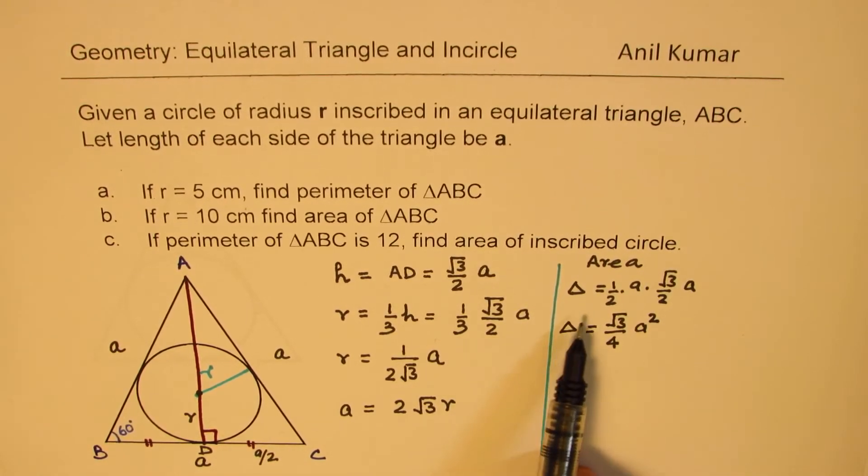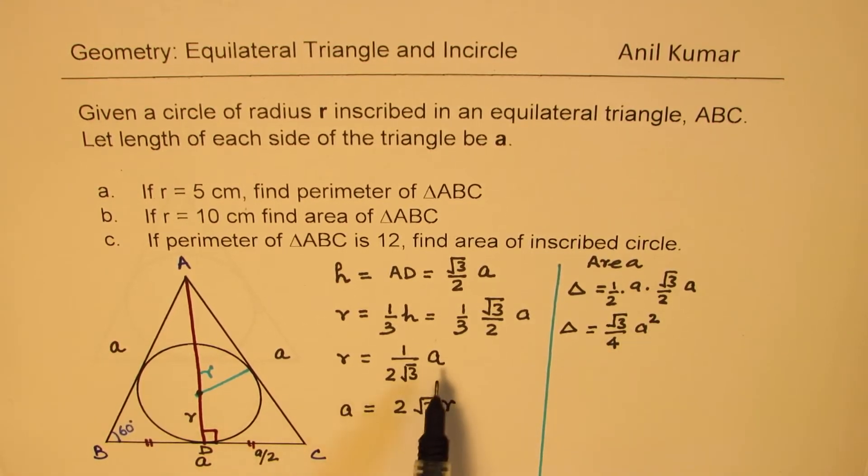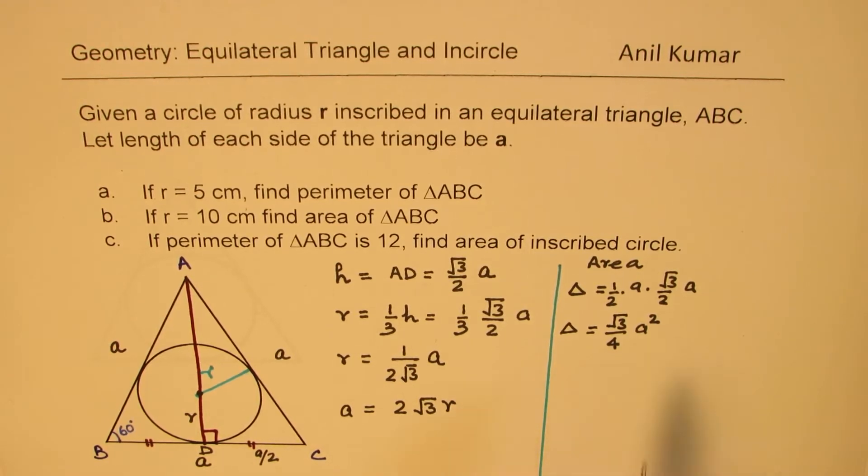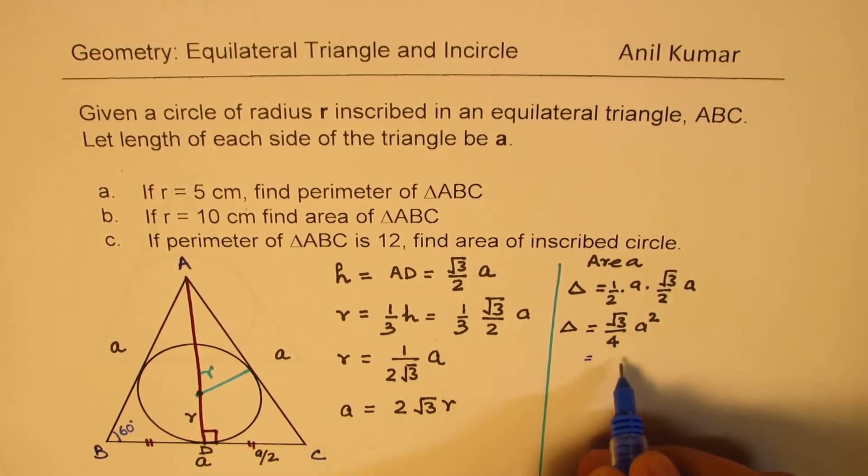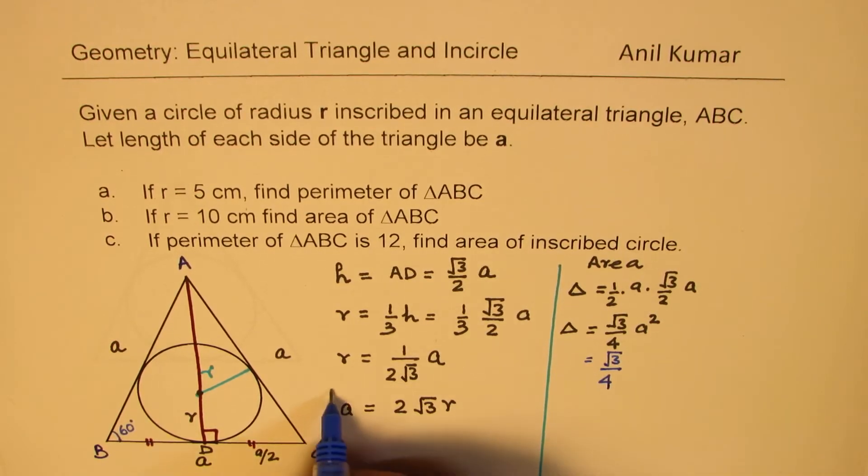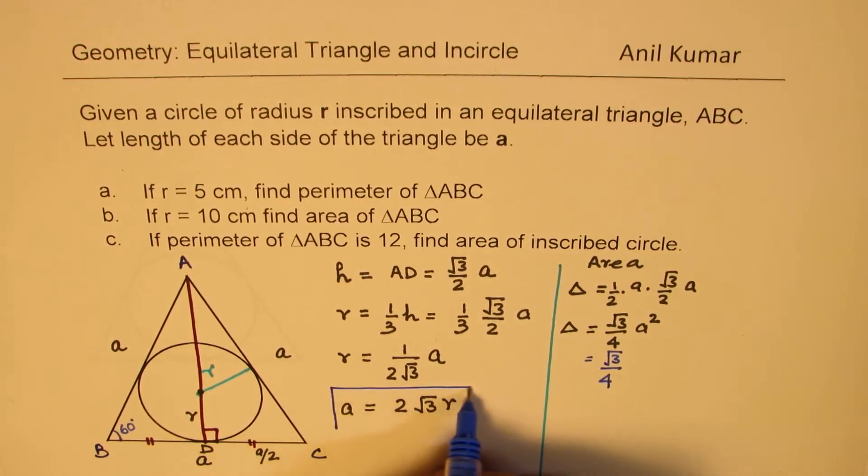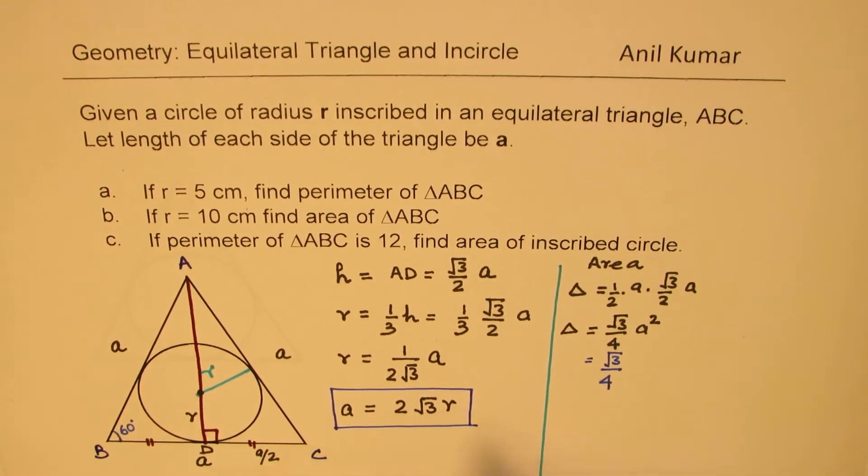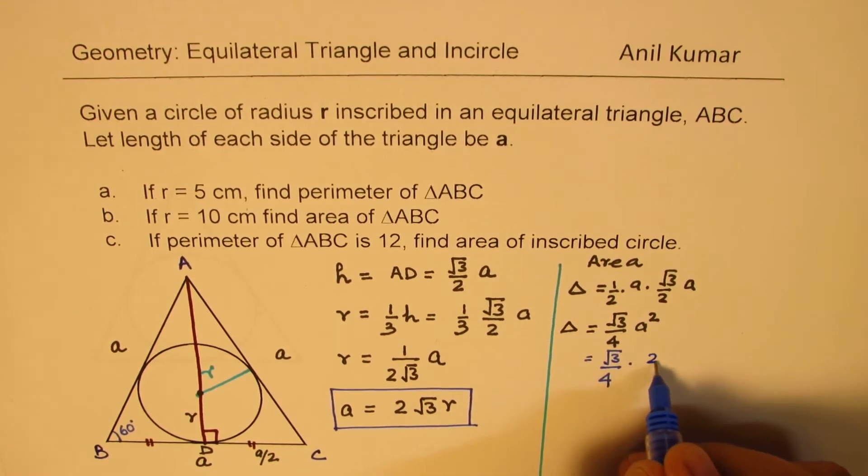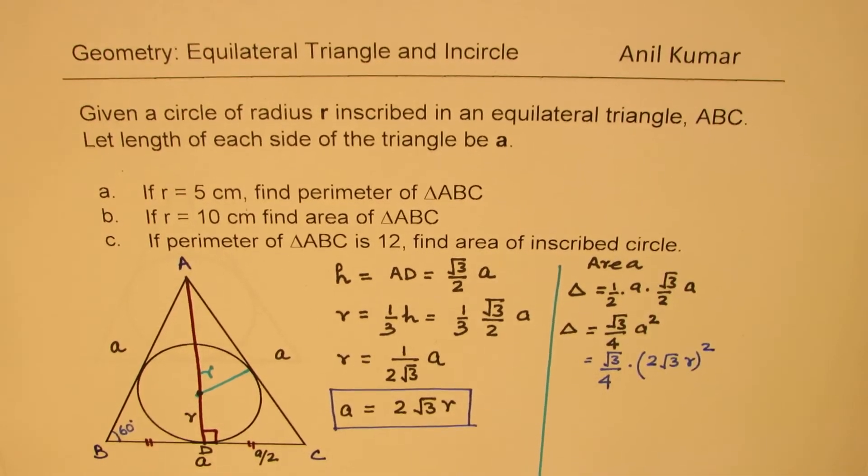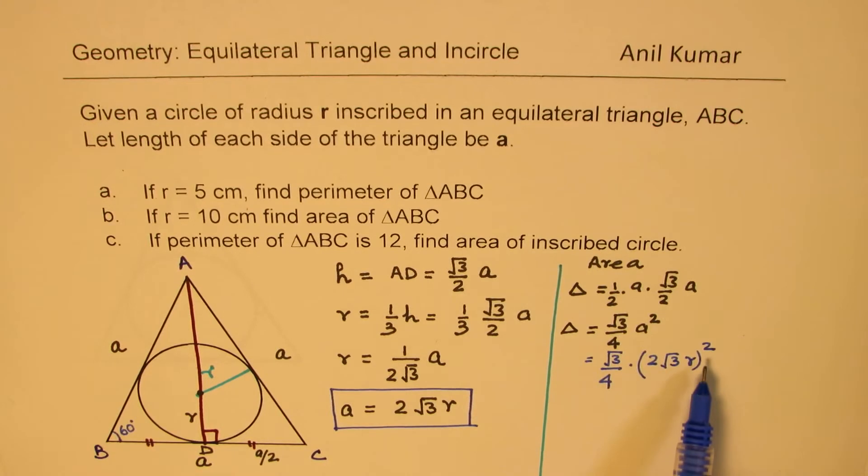Importantly, we know this in terms of side length. We can substitute a = 2√3·r. In that case, we can write the area as (√3/4)·(2√3·r)².